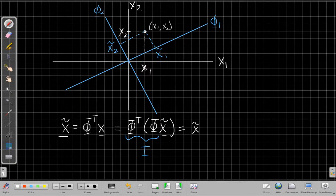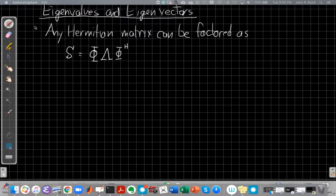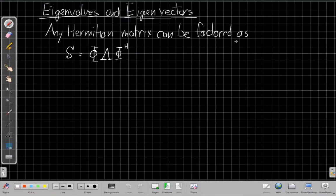So how does this help us when we have correlated spatial covariance matrices? Well, the key to that is eigenvalues and eigenvectors.